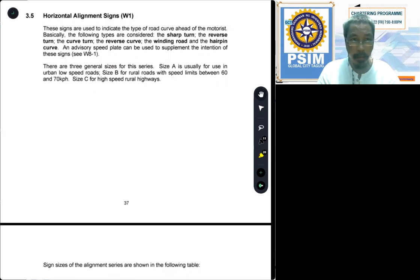In this module, let us now start with discussing the different types of warning signs. Let us start with type W1 classification, which means horizontal alignment sign. These signs are used to indicate the type of road curve ahead of the motorist, and the signs indicate the type of curvature of road.